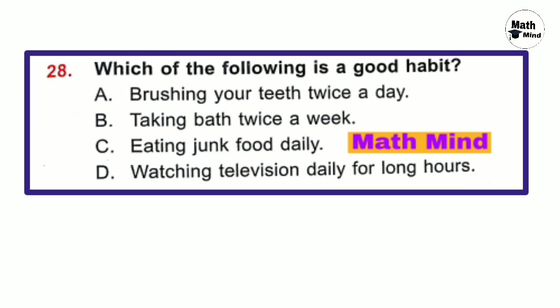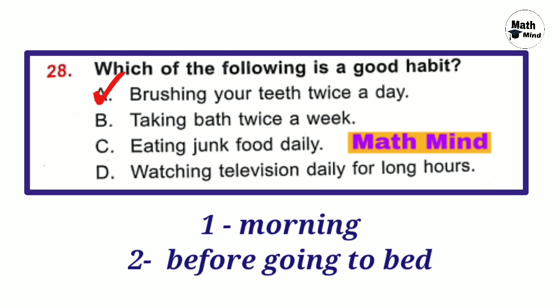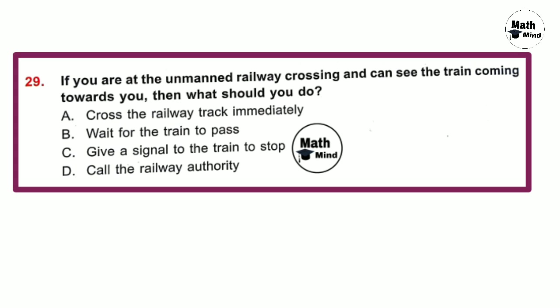Question number 28: Which of the following is a good habit? Option A is correct — brushing your teeth twice a day: morning and before going to bed. Question number 29: If you are at an unmanaged railway crossing and can see a train coming towards you, what should you do? Option B is correct — wait for the train to pass. Crossing the track immediately or signaling the train to stop may cause an accident. Calling the railway authority is also wrong.